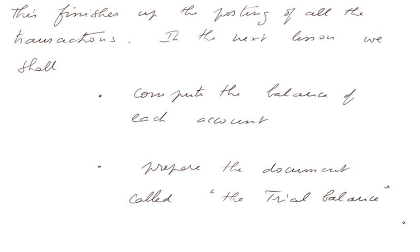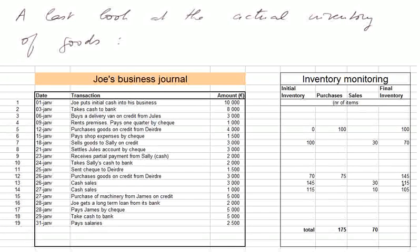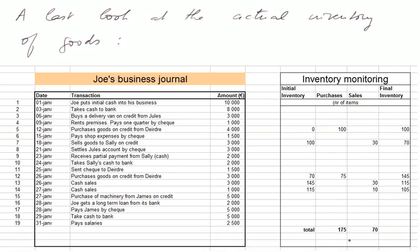Before finishing this lesson, let's look at the inventory of goods — something taken care of in year-end adjustments. We purchased 100 items, sold 30, leaving 70. We purchased a further 75 items, reaching 145. We sold another 30 items, bringing inventory to 115, then sold another 10 (both were cash sales), leaving an ending inventory of 105 items. Total purchases: 175 items. Total sales: 70 items.